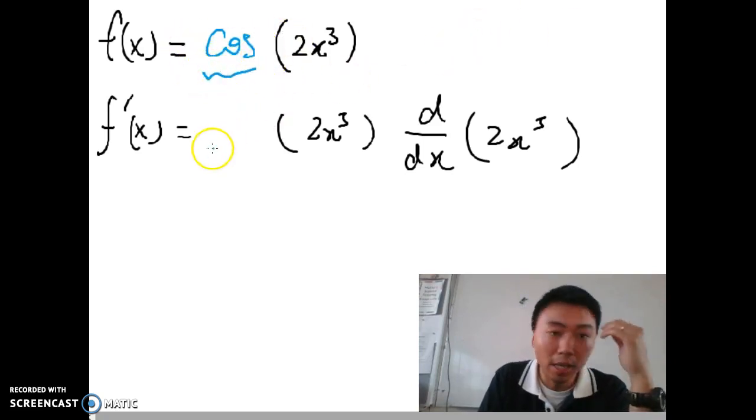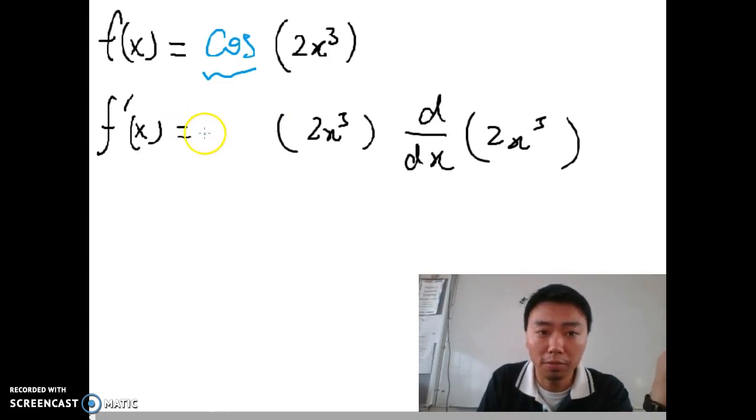So this cos, when I check the equation or formula sheet, it will change to sine. OK, so this is what I have to change for the first step.